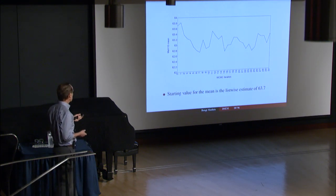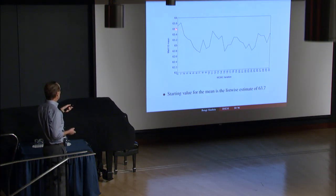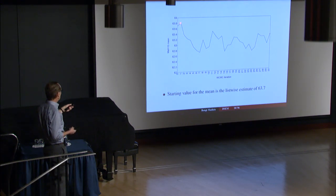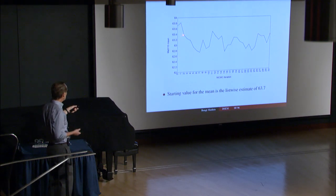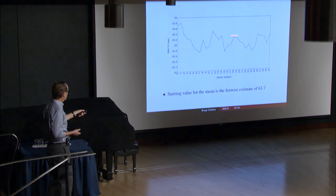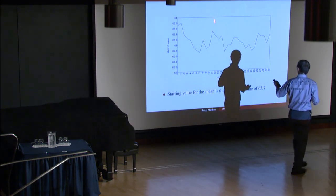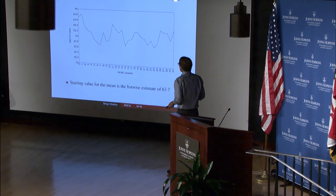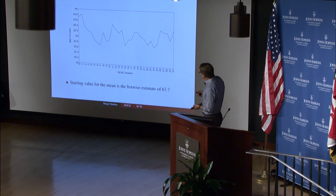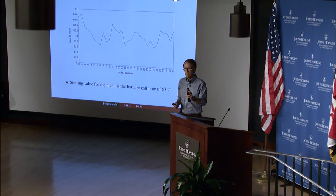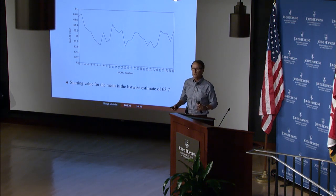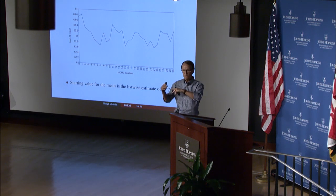We start at, say, a list-wise estimate of the mean, 63.7. Then we take a random draw from the distribution — conditional on other unknown things — and it goes up a little bit, then the next iteration goes down, then up, down. You see it starts to come toward a sort of stable level, but with jumps up and down. What this eventually leads to is not only a parameter estimate — it leads to a whole distribution for this parameter estimate.